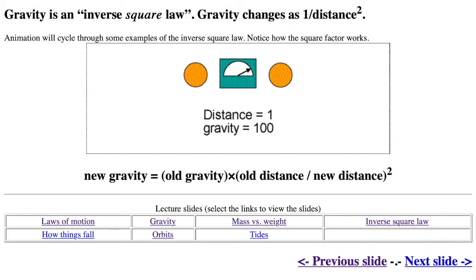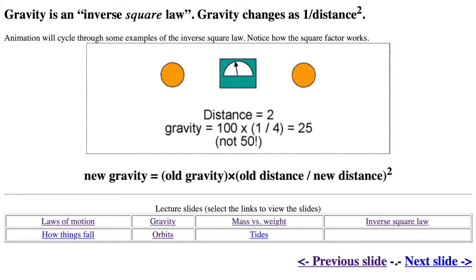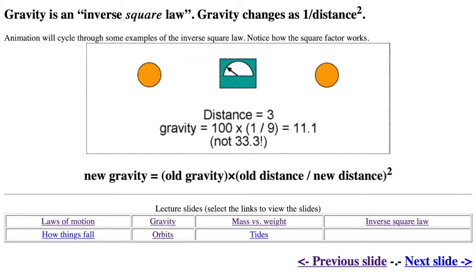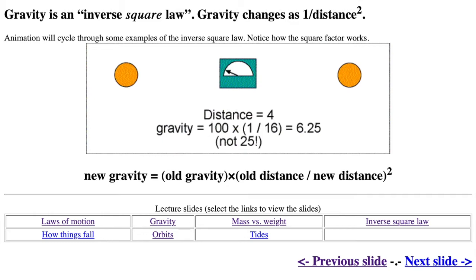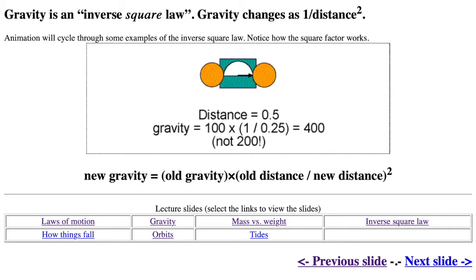Gravity is an inverse square law force, which means that gravity changes as 1 over distance squared. Don't forget to square the distance effect. The animation cycles through different inverse square law examples. As distance gets bigger, gravity gets smaller in the way shown in the equation. The old gravity force or calibration gravity force is set to 100 in these examples. The old distance or calibration distance is set to 1. Compared to the calibration setup, how does the gravity change with the different distances? Fill in the table as the animation cycles through the different distances.